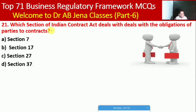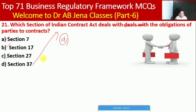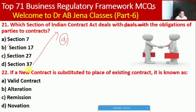Next MCQ: which section of the Indian Contract Act deals with the obligations of parties to a contract? Whether Section 7, 17, 27, or 37. Here D is the right option — Section 37 of the Indian Contract Act deals with the obligations of parties to a contract.